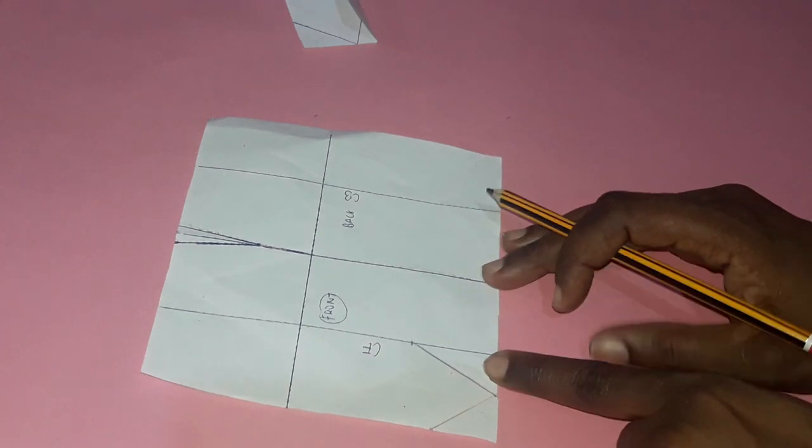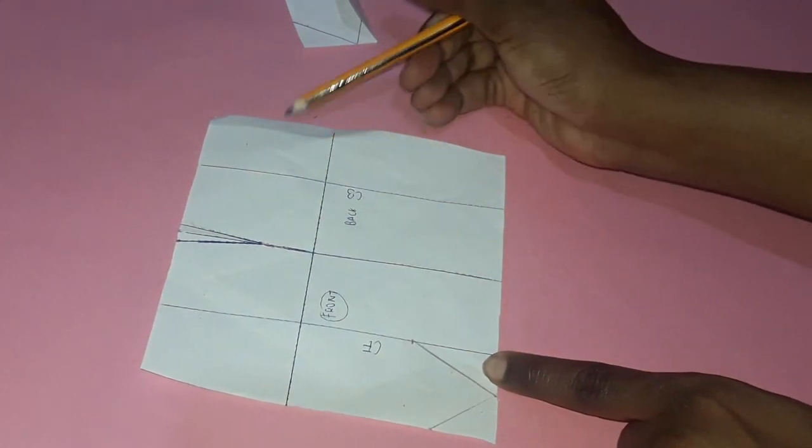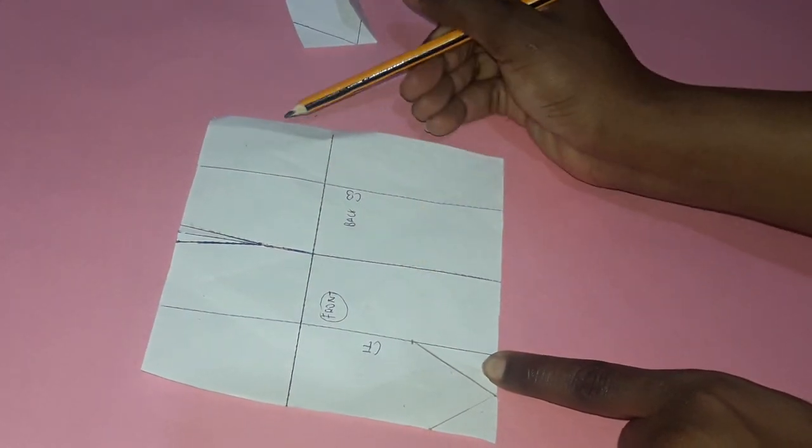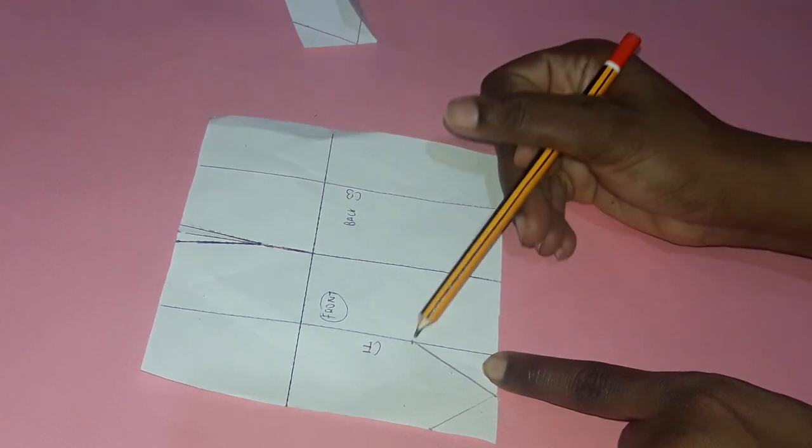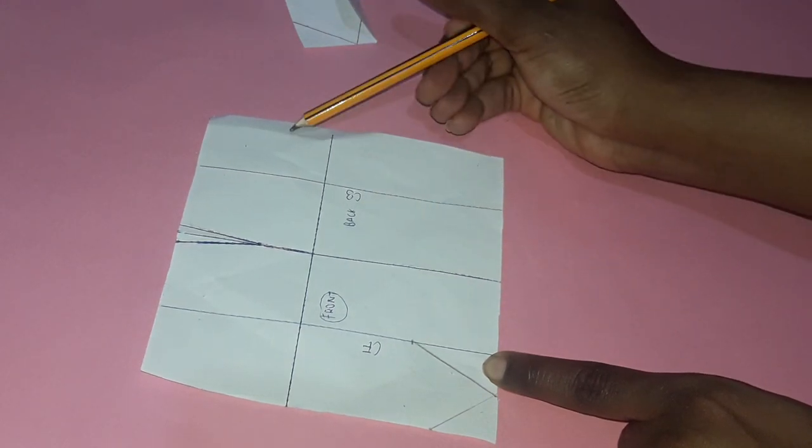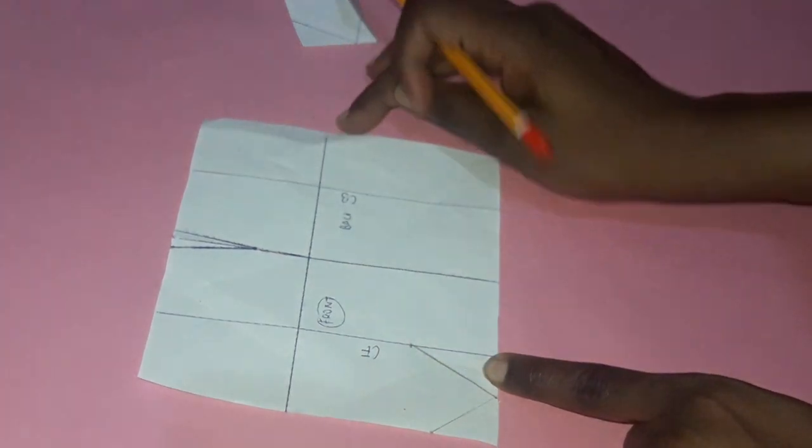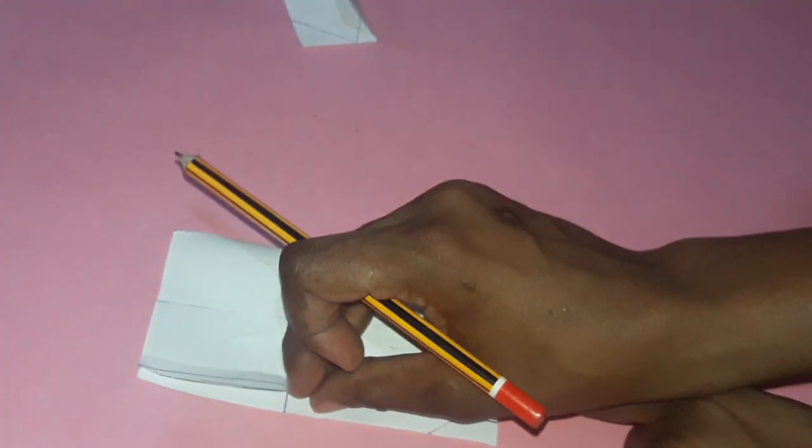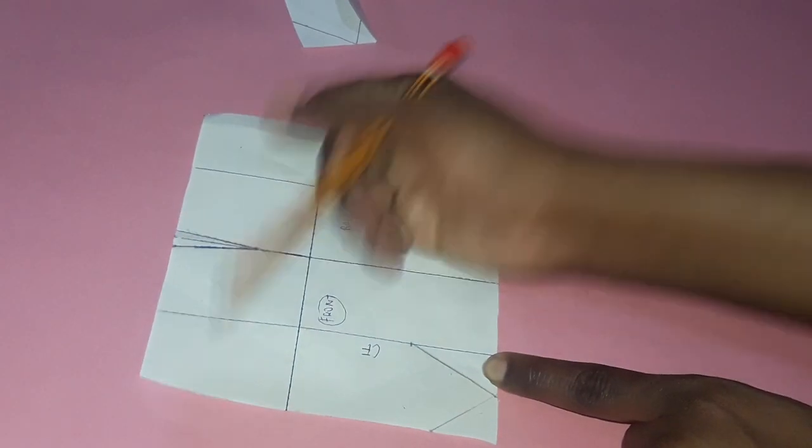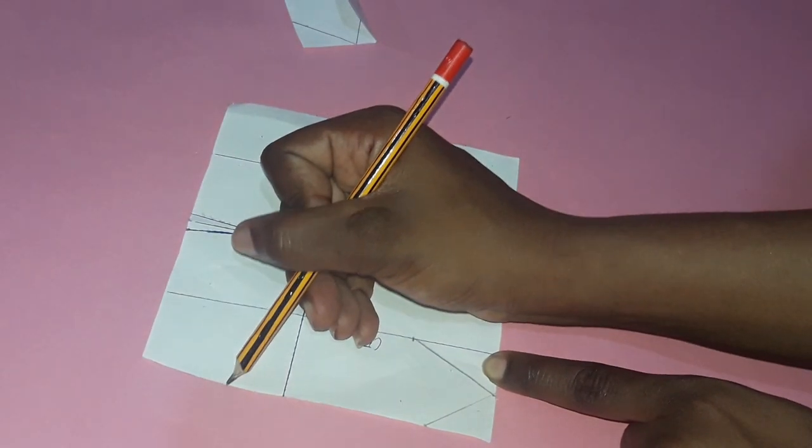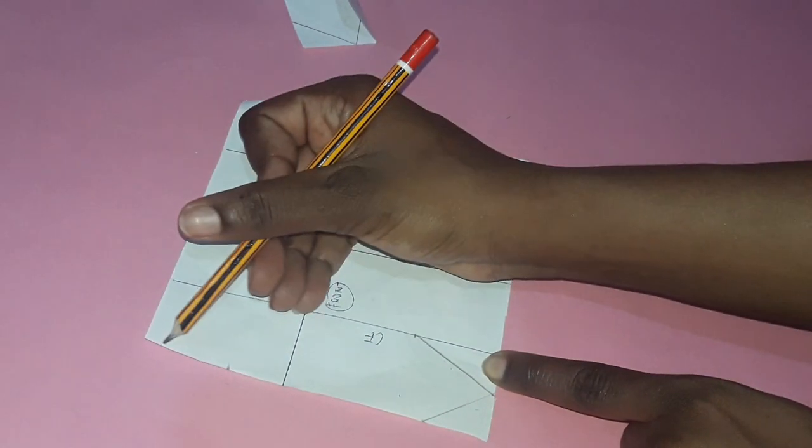So the third thing you would see is that this line goes here. So this is how to actually create the pattern. Now once this line goes from here to here, it's like a curve. What happens is that when you cut it out and you fold it back, it ends exactly here.